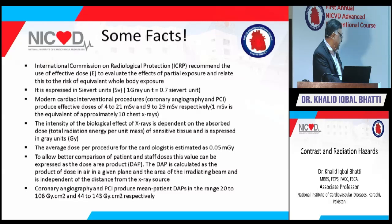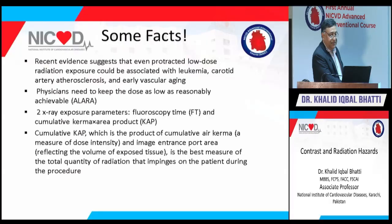Patient doses for coronary angiography range from 20 to 106 gray·cm², and for PCI from 44 to 143 gray·cm². Recent evidence suggests that even prolonged low-dose radiation exposure is associated with leukemia, carotid artery atherosclerosis, and early vascular aging. Physicians must keep the dose as low as reasonably achievable (ALARA). Fluoroscopy time and cumulative Kerma Area Product (KAP) are the two key X-ray exposure parameters used to minimize radiation.